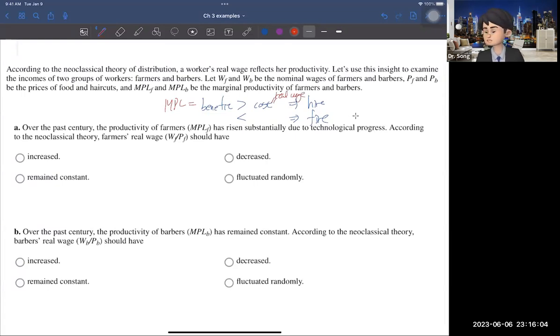Now, question number A, it says that over the past century, the productivity of farmers has risen substantially due to technological progress. According to the neoclassical theory, farmers' real wage should have increased.